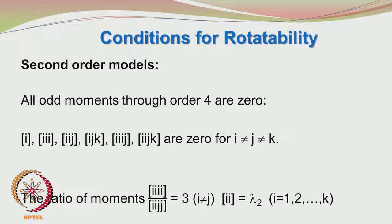Looking at more conditions for rotatability for second order models: all odd moments through order 4 are 0, and there is a difference between mixed moments and odd moments. If you have i²j², they are considered mixed moments because i is not equal to j — but the powers are both 2, so you cannot call it an odd moment. However if you have i³j, the power of i is 3 and the power of j is 1, both odd — so here you have odd moments.